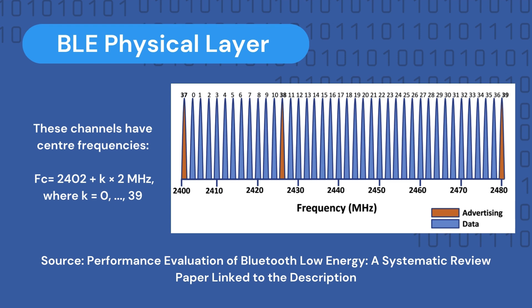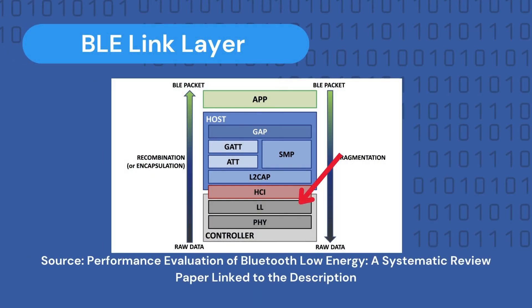The remaining channels are used to exchange data packets in established connections. To avoid interference and fading with other wireless communication devices in the same radio band, such as Wi-Fi or classic Bluetooth, BLE implements the frequency hopping technology discussed earlier. The second layer is the link layer, which directly interfaces with the physical layer and is a combination of both hardware and software parts. This layer defines the type of communication that can be created between BLE devices and defines the roles a device can play: master, slave, advertiser, or scanner.